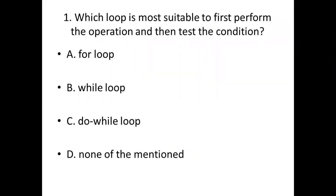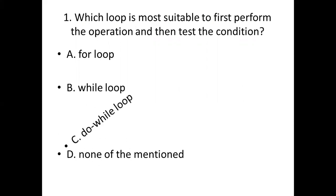Which loop is most suitable to first perform the operation and then test the condition? Option A: for loop. Option B: while loop. Option C: do-while loop. Option D: none of the mentioned. Answer: Option C, do-while loop.